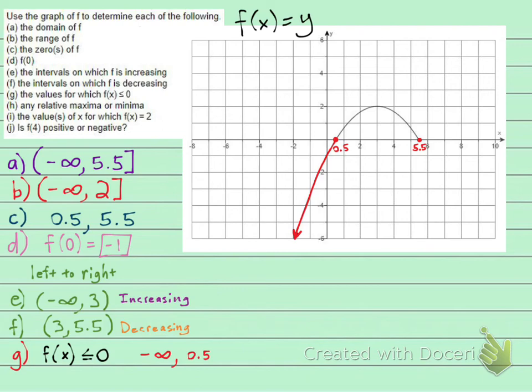Now for interval notation, your infinities and negative infinities always get parentheses. 0.5 is included. So we put a bracket.